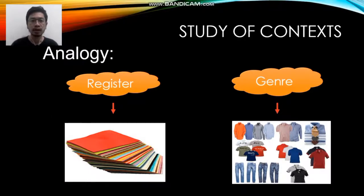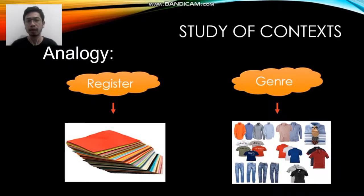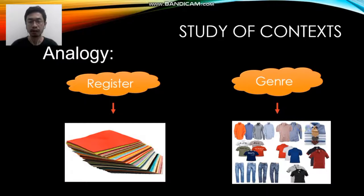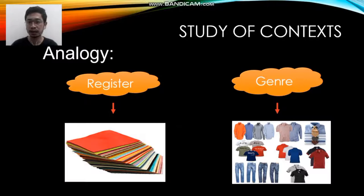Thompson in his book uses this analogy to illustrate the relationship between register and genre. Register is seen as cloth, while genre is seen as garment. Genre has a certain function and purpose, while register can be further processed to make genre. So genre is made of register plus the purpose or the function.